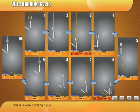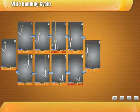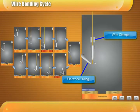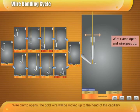This is a wire bonding cycle. Wire clamp opens, the gold wire will be moved up to the head of the capillary.